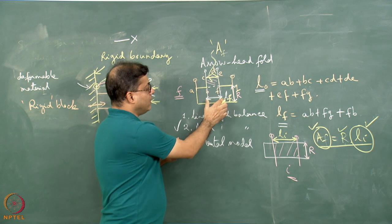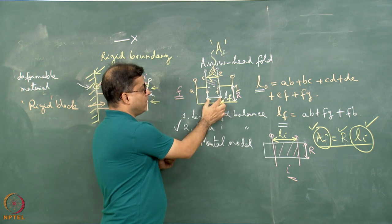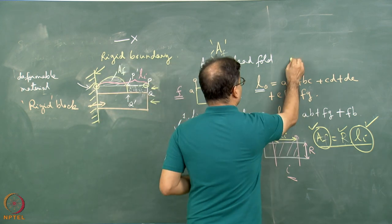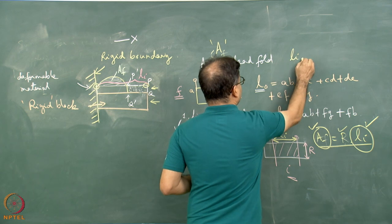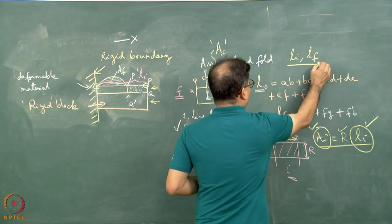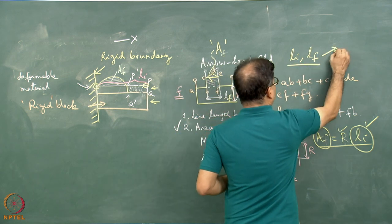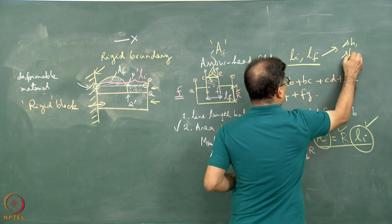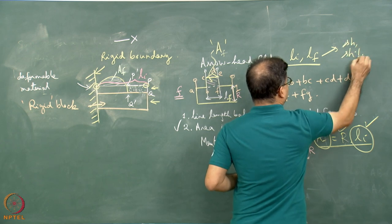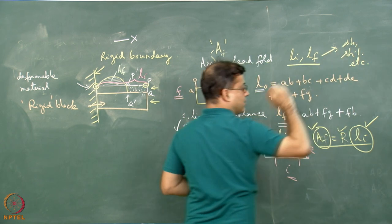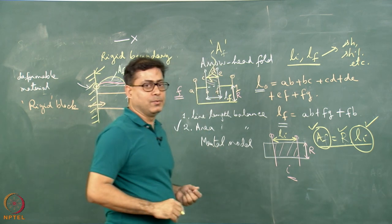The L final is known from the given diagram and L initial has been worked out. So from the known L initial and L final, we will find out shortening, shortening percentage, etc. It is possible to do.